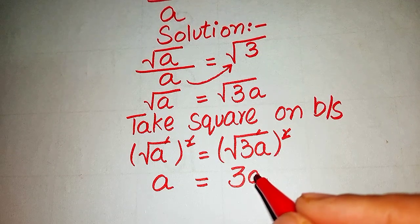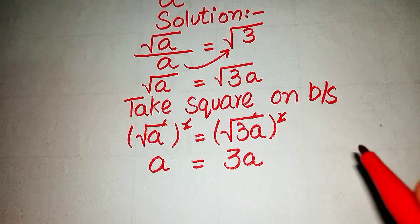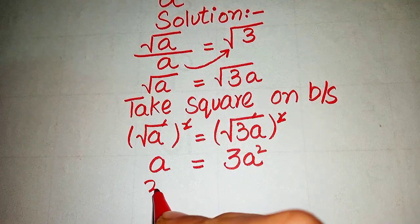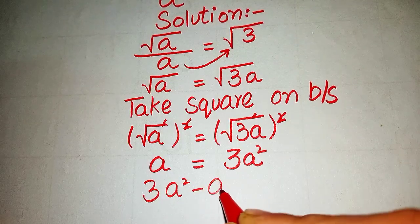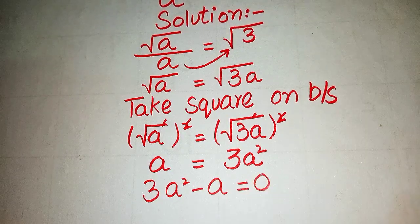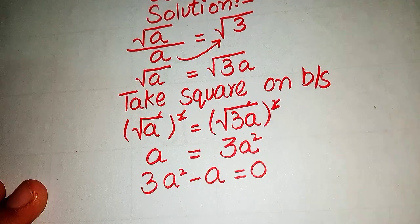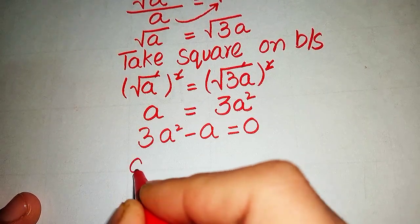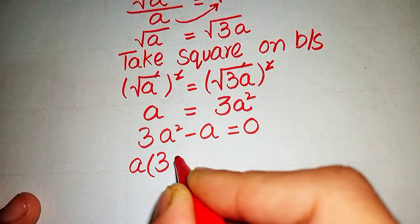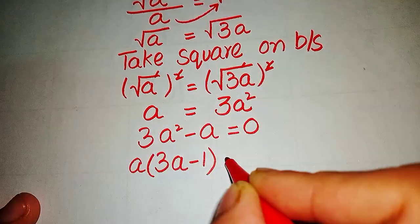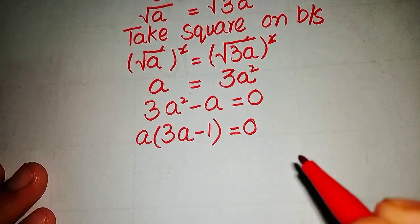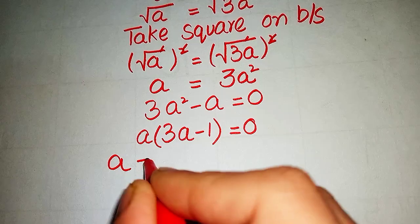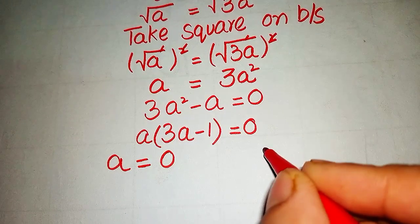We can see that this becomes 3a². So we write the equation as 3a² - a = 0. There is a common factor of 'a', so we factor it as a(3a - 1) = 0, giving us two values for a: a = 0 and 3a - 1 = 0.